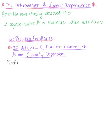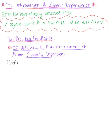We now need to explore the connection between the determinant and linear dependence. We've observed in our exploration of the determinant that a square matrix A is invertible when the determinant does not equal 0. Two important corollaries result from this that help us in the simplification process of finding the determinant of larger matrices. The first corollary is that if the determinant of A is equal to 0, then the columns of matrix A are linearly dependent.